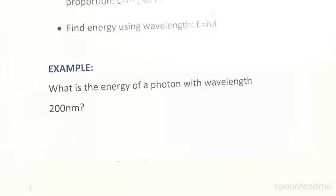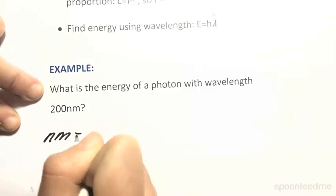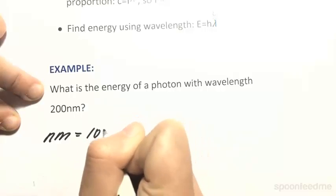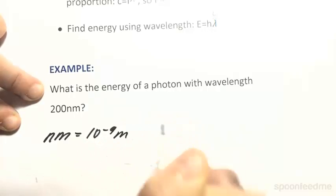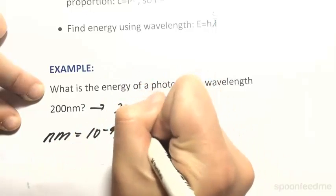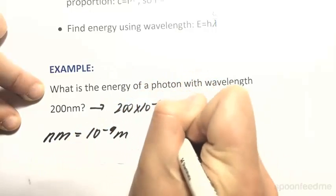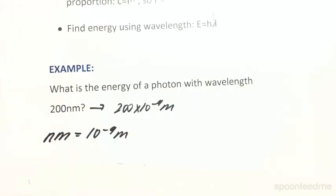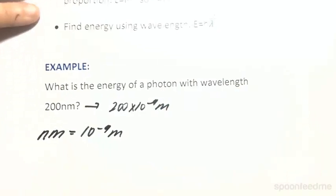We're given our wavelength in nanometers. Remember, the standard units for length is metres, not nanometres. A nanometer is actually equal to 10 to the power of negative 9 metres. So 200 nanometres is equal to 200 times 10 to the power of negative 9 metres. Therefore, to calculate this, let's sub it into our equation.